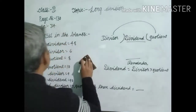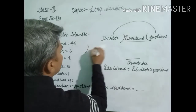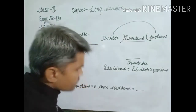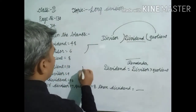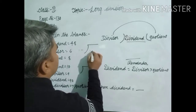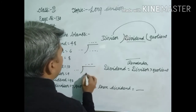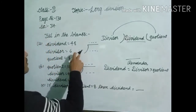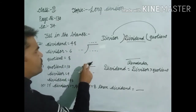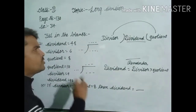Dear students, in the first question, here put the data. Also here, and here fill in the blanks. Also here fill in the blanks, and also here fill in the blanks. Dear students, you must write here: divisor, dividend, quotient. Divisor, dividend, quotient. Because here I also discussed before you started your topics: divisor, dividend, quotient, and remainder.